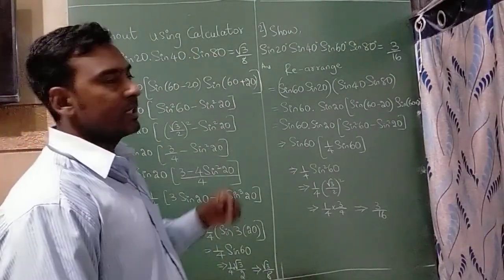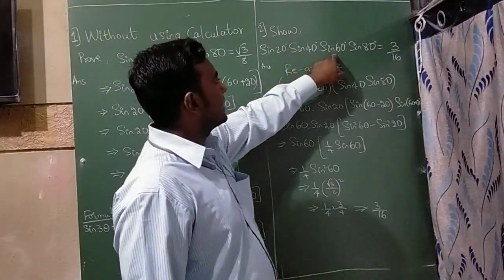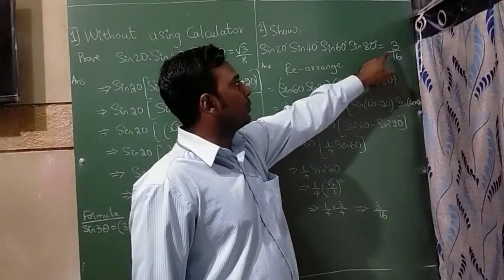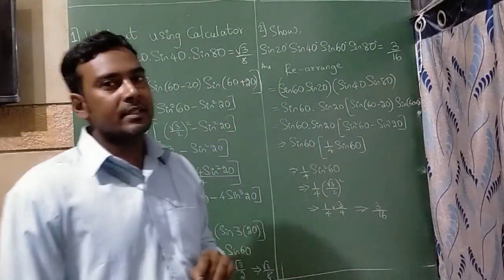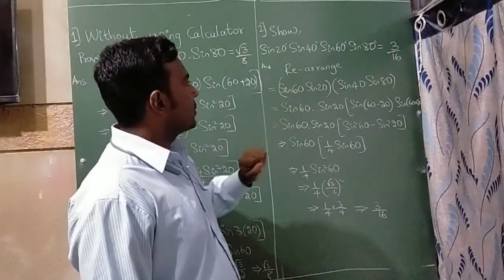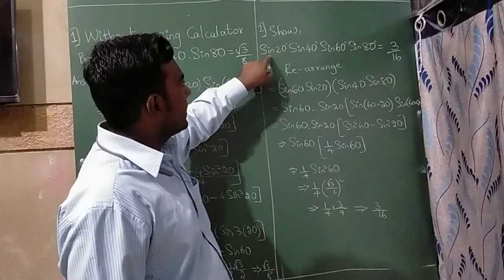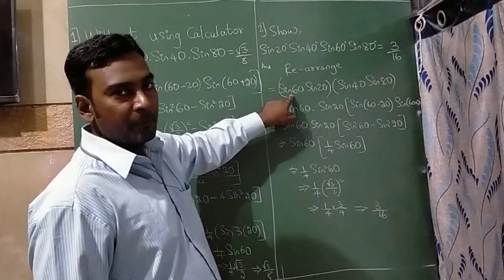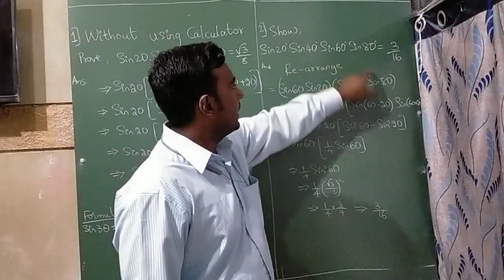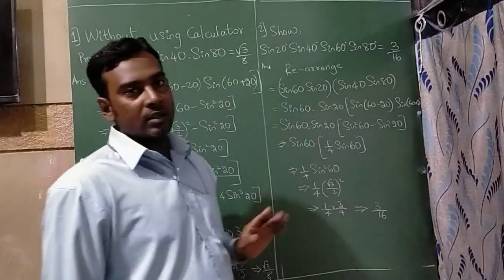So let us move on to the second sum, sin 20 degree, sin 40 degree, sin 60 degree, sin 80 degree, we need to prove that it is 3 by 16. So I will rearrange, what I will do is, I will write sin 20 degree here, sin 60 degree here, sin 40 and sin 80 in a separate.